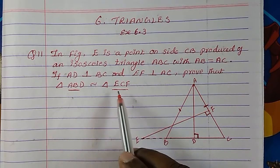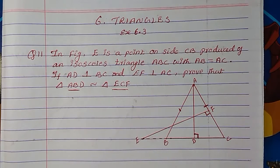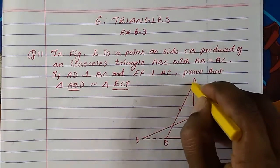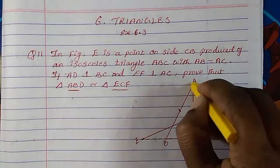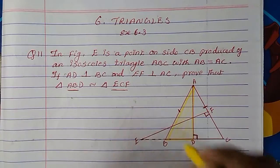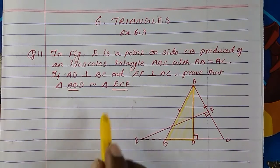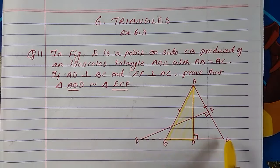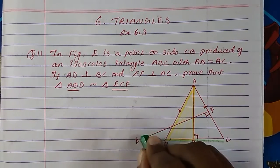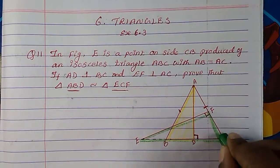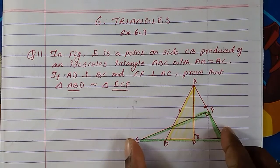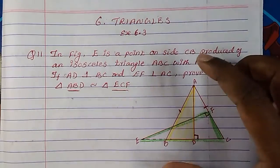We need to prove that triangle ABD is similar to triangle ECF. Triangle ABD has vertices A, B, D, and triangle ECF has vertices E, C, F. We have to prove this green color triangle and this yellow color triangle are similar.